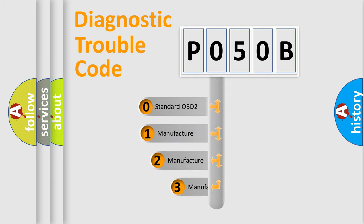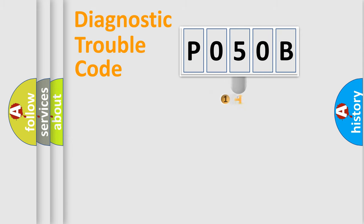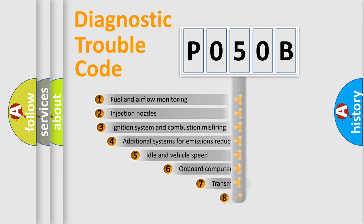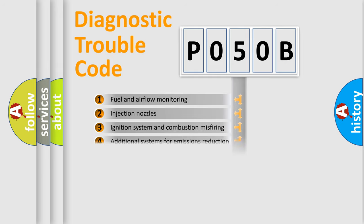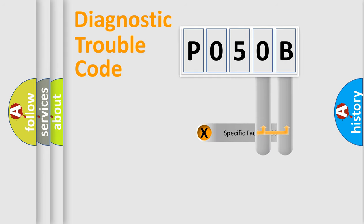If the second character is expressed as zero, it is a standardized error. In the case of numbers 1, 2, 3, it is a more precise expression of the car-specific error. The third character specifies a subset of errors. The distribution shown is valid only for the standardized DTC code. Only the last two characters define the specific fault of the group.